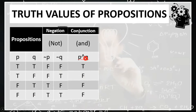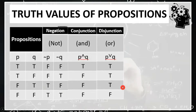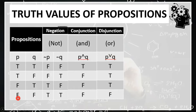Conjunction is denoted by this symbol. For disjunction, we use the word 'or' and it is denoted by this symbol. It can only be false if both of the disjuncts — both of the propositions — are false. Otherwise, it is true.